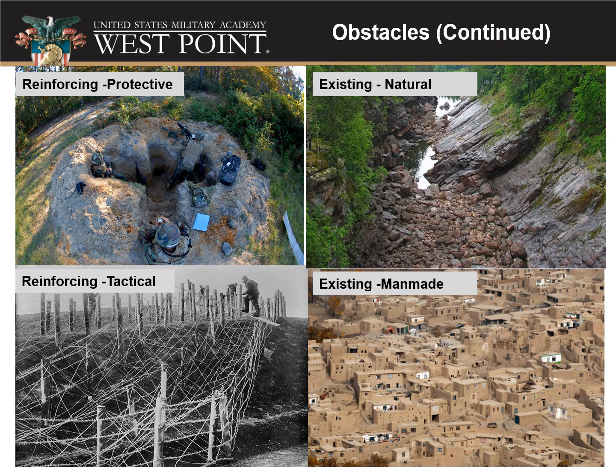We can be more refined about obstacles. Reinforcing protective obstacles, like a foxhole dug in with earthworks to protect soldiers, serve a protective purpose. Reinforcing tactical obstacles, like tangle foot wire, are meant to shape the battlefield and how the enemy moves. For existing obstacles, we break them into existing natural — streams, rivers, ravines, cliffs — and existing man-made, such as buildings, fences, and hedgerows that are already on the terrain for non-military reasons.